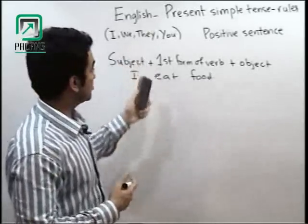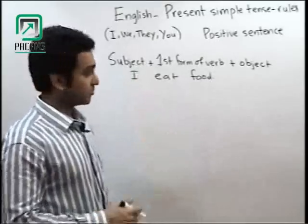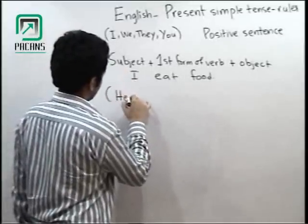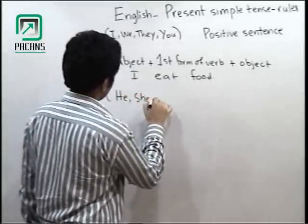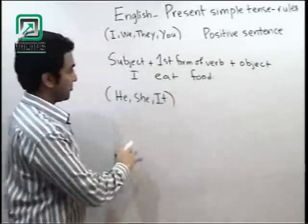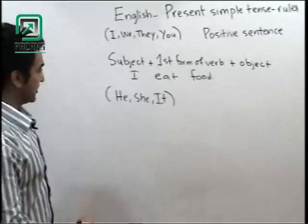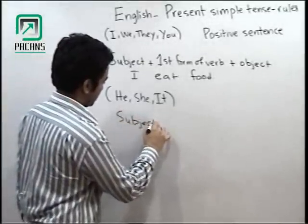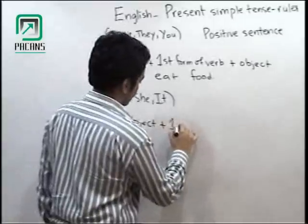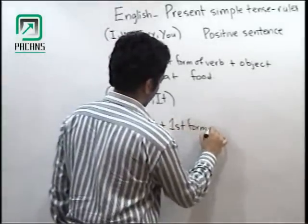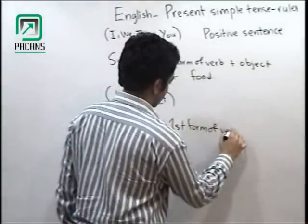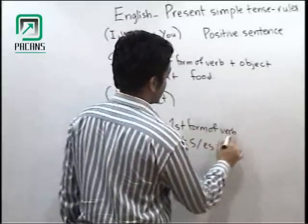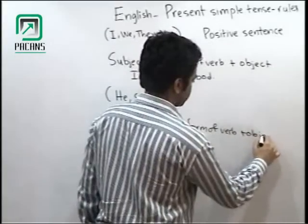Now if your subject is he, she, or it, what will happen? Subject plus first form of verb plus s or es plus object.